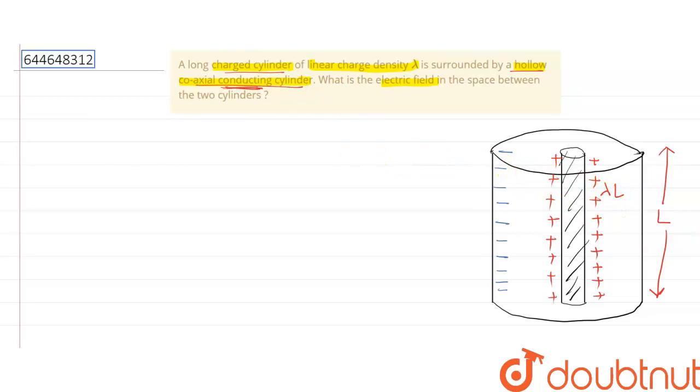Due to which the charges will produce an electric field that is going from the long charged cylinder to the hollow cylinder. There will be electric field inside these two cylinders. It will start from the long charged cylinder and it will terminate on the hollow coaxial conducting cylinder.